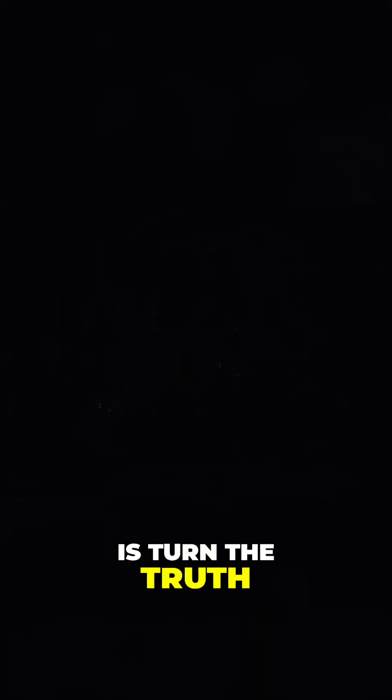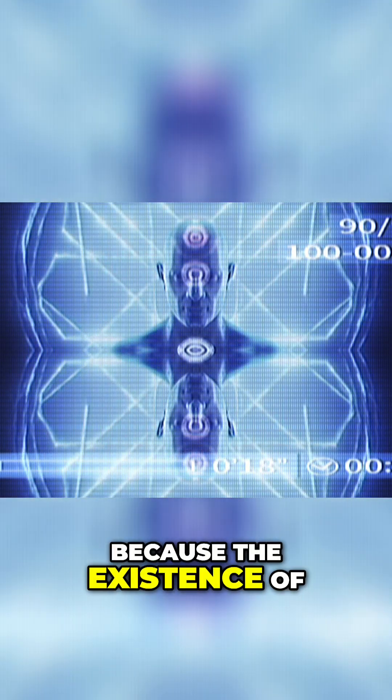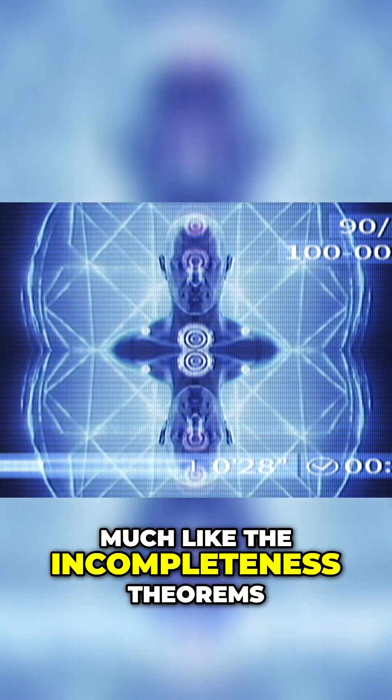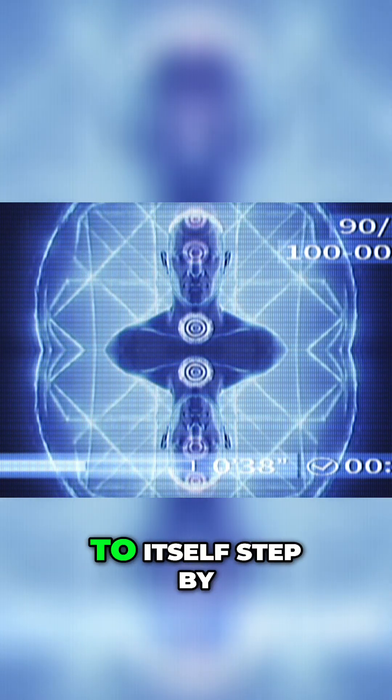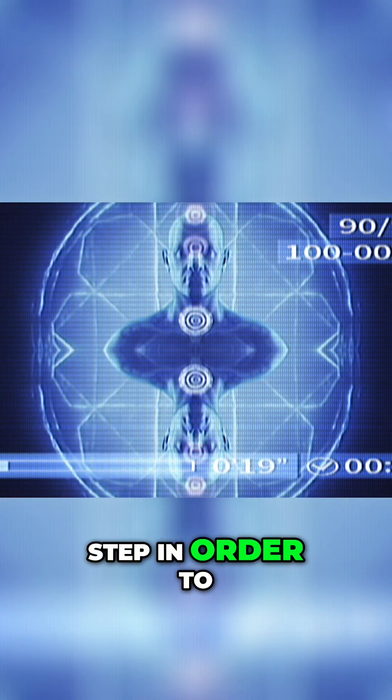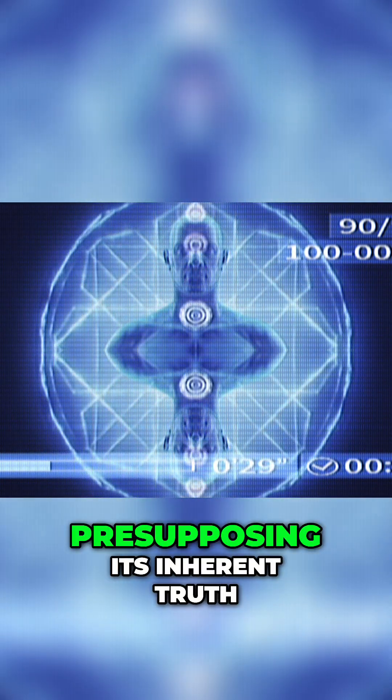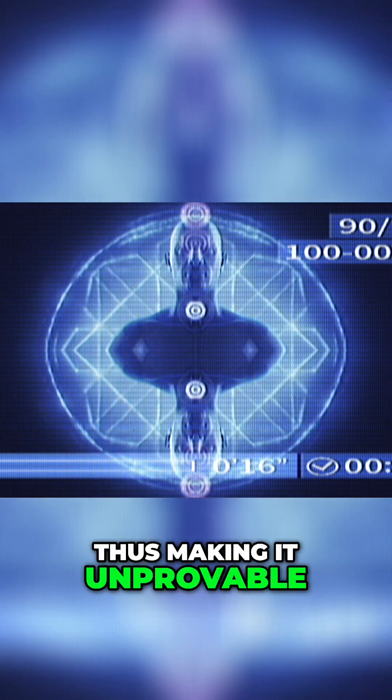But all this does is turn the truth back in on itself because the existence of the self, much like the incompleteness theorems, cannot be traced back to itself step by step in order to prove it without actually presupposing its inherent truth, thus making it unprovable.